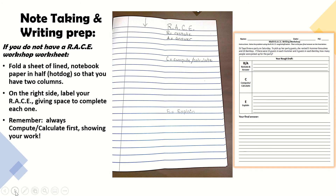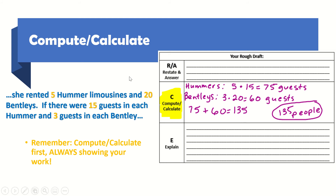So let's dive in — let's compute and calculate. She rented five Hummer limousines and 20 Bentleys, with 15 guests in each Hummer and three guests in each Bentley. We are going to compute and calculate first, always showing our work, because I can't restate an answer or explain something I have not done yet. So, in order to solve this, here's what I have done for my work.